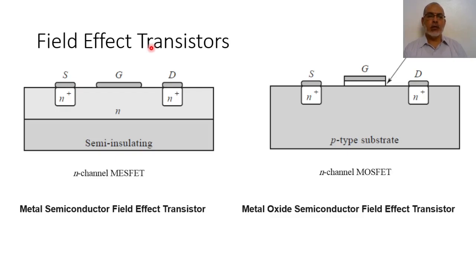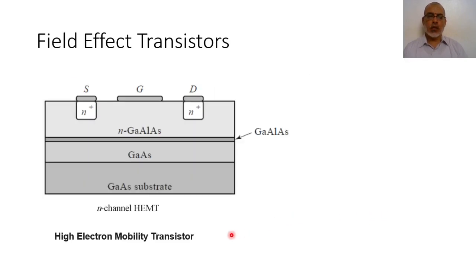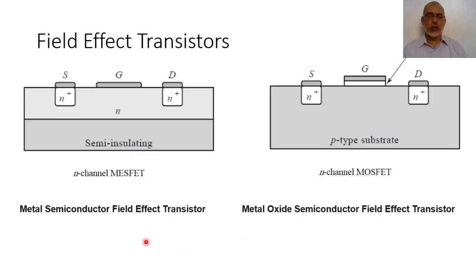The first type is the metal semiconductor field effect transistor. The second type is the metal oxide semiconductor field effect transistor, and the third type is the high electron mobility transistor.